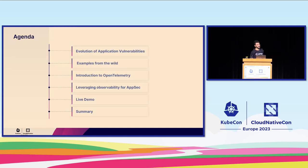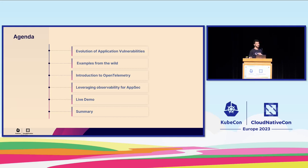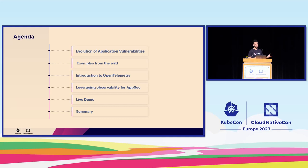A short overview of the agenda: we'll start with reviewing the evolution of application vulnerabilities — vulnerabilities in code written within the organization. We will see some examples of vulnerabilities we found in cloud native projects, specifically CNCF projects. We'll do a short introduction on what OpenTelemetry and observability are, and why we need observability to understand our applications. Then we'll discuss how we can connect application security and observability with OpenTelemetry, and finally we'll see a live demo of a cloud native vulnerable lab with OpenTelemetry installed.